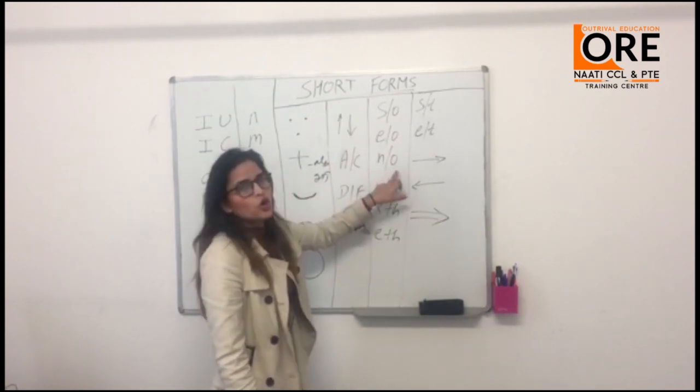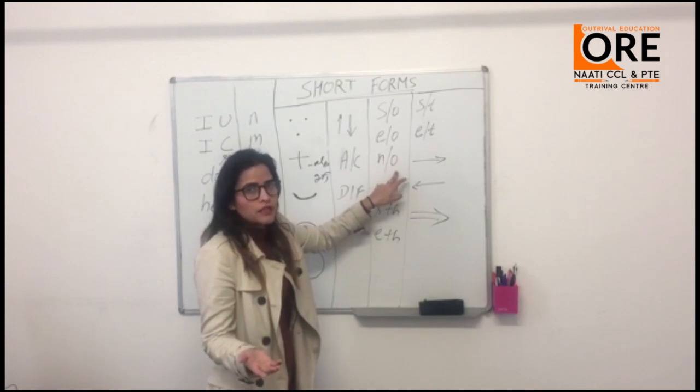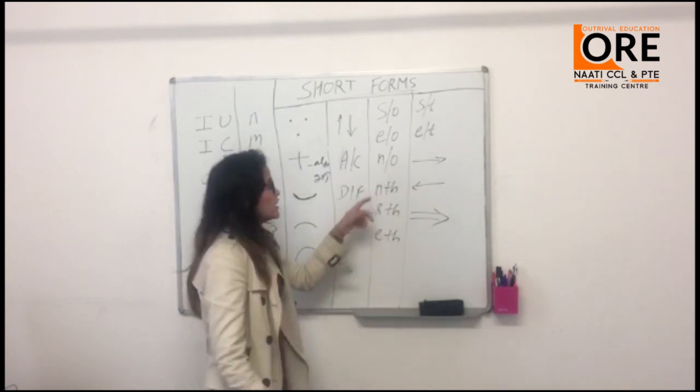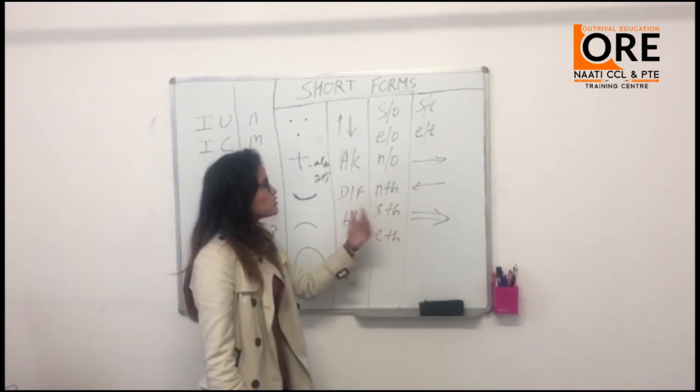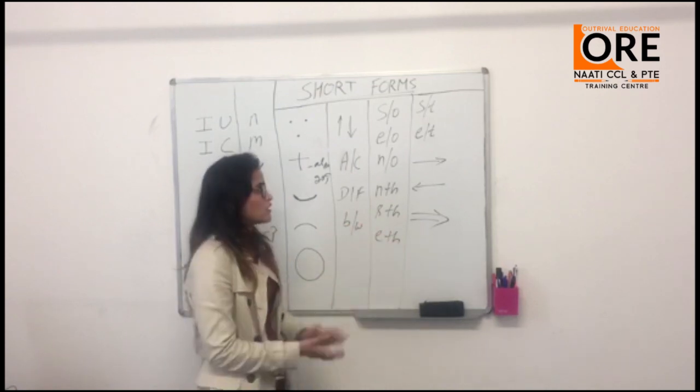Meaning someone, everyone, no one. 'I went there but there was no one to help me.' So you'll write 'no one'. Nth - nothing, Sth - something, Eth - everything.